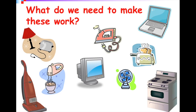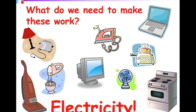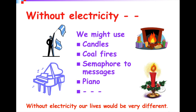Everything we do — what do we need to make appliances work? For example, the oven, the toaster, the laptop, and the iron — all of these need electricity. Without electricity, we might use the old style, for example candles or coal fire. We can use the traditional piano and don't need to use the electric one, because the electric one needs electricity. So many things can work using different forms of energy.